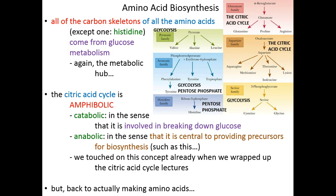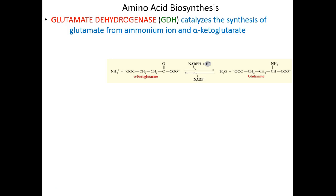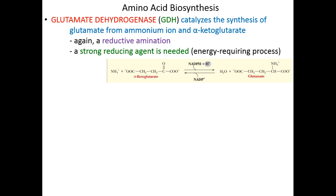Let's go back to actually making amino acids in a little more detail. The enzyme glutamate dehydrogenase, or GDH, is responsible for that reductive amination we just talked about. This enzyme catalyzes the synthesis of glutamate from alpha-ketoglutarate and ammonia ion. This is catalyzed by glutamate dehydrogenase — a good name because it suggests that a redox reaction is occurring, a redox reaction which results in the formation of glutamate. We need a strong reducing agent for this; we need a lot of energy to force this to happen, and that energy comes from electrons carried by our high-power electron carrier NADPH.